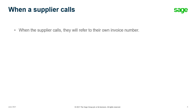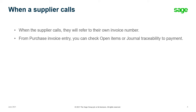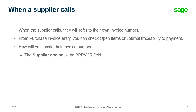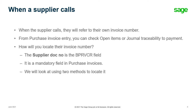When a supplier calls they will refer to their own invoice number - they may be looking for payment. We'll go to the purchase entry screen because from there we can check for open items or use the journal traceability to go back to the payment. The supplier doc num is the BPR VCR field. We'll look at two methods to locate it: advanced selection, and adding the BPR VCR field to the left list.